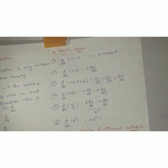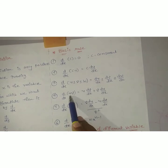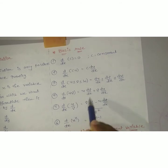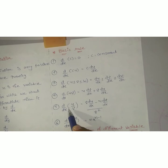Next: d by dx of u·v — if you have two variable quantities multiplied together, how do we differentiate? Keep the first quantity as it is and differentiate the second quantity, plus keep the second quantity as it is and differentiate the first quantity. That is the product rule. Similarly, if two variable quantities are divided, we apply the quotient rule.